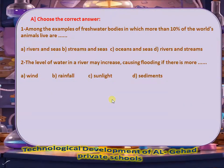Choose the correct answer. 1. Among the examples of fresh water bodies in which more than 10% of the world's animals live are rivers and streams. 2. The level of water in a river may increase causing flooding if there is more rainfall.